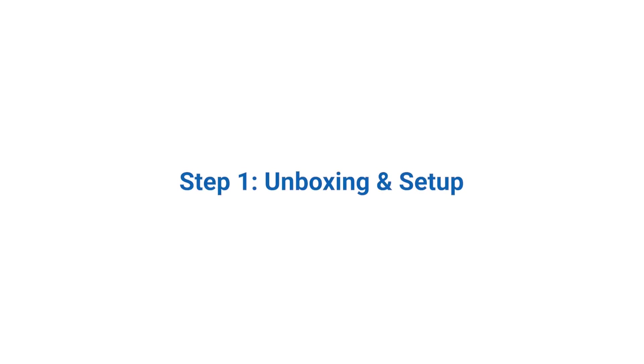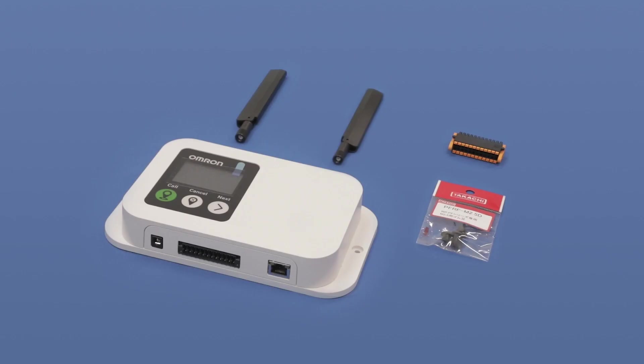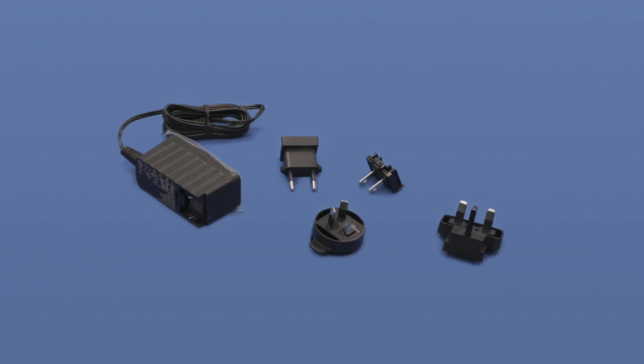Step 1. Unboxing and Setup. The items inside the package will be the following: The Mobile I.O. Box, 4 rubber feet, 2 antennas, and 1 I.O. connector. The power supply has a separate part number, and it will come in a separate box.